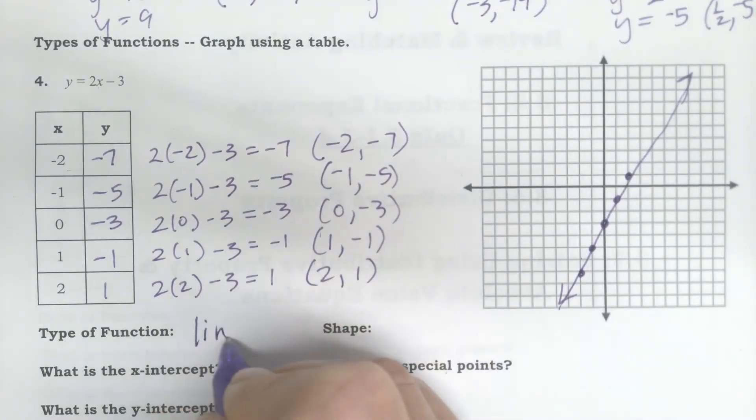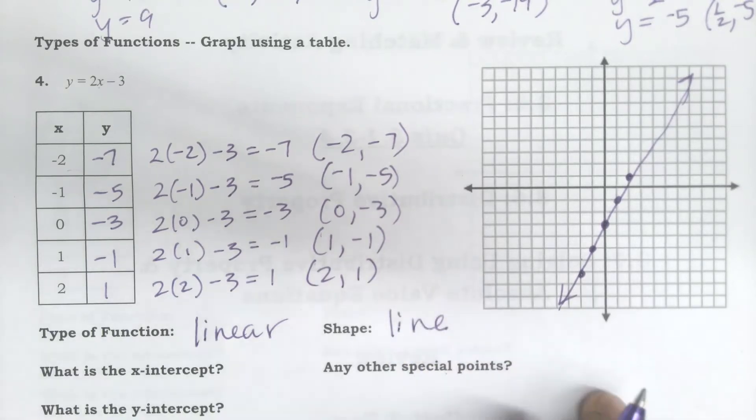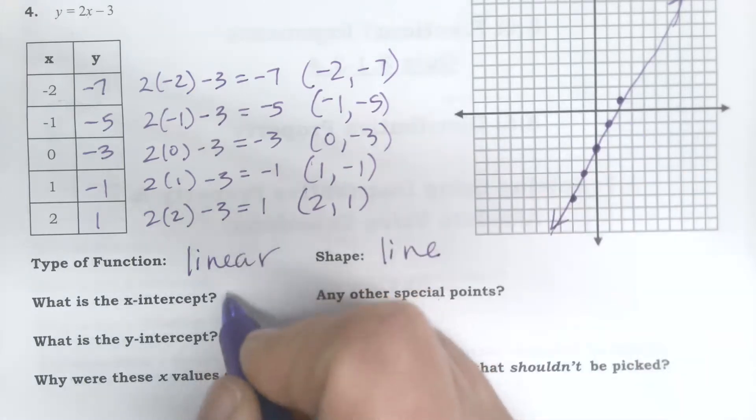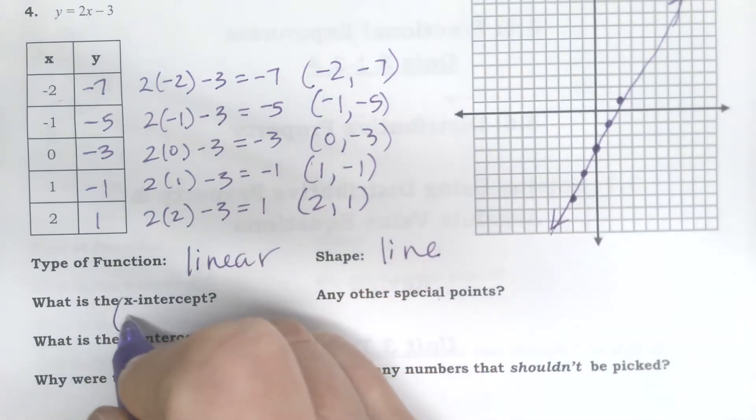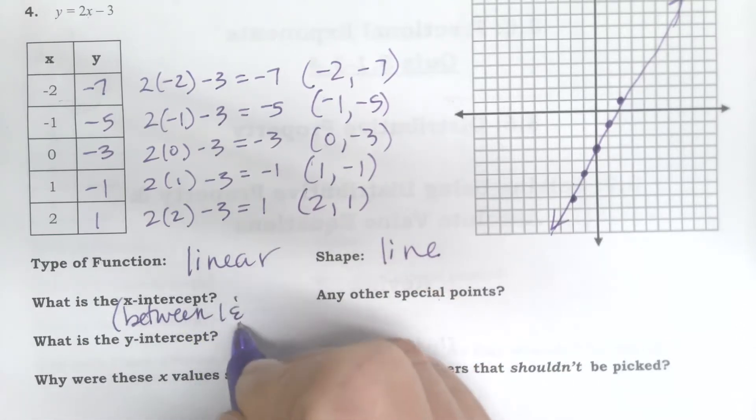This is called a linear function. It's in the shape of a line. The x-intercept is where it crosses the x-axis, and that's somewhere between, looks like 1 and 2.